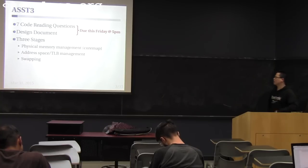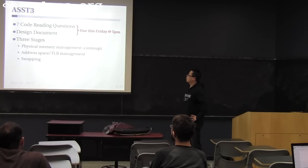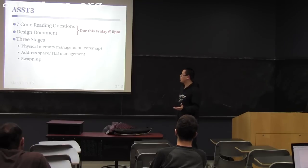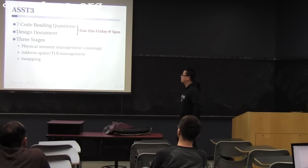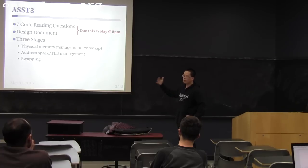This is a summary. It has questions as usual and a design document, both due this Friday afternoon. You can split the assignment into three stages. The first stage is physical memory management — you allocate physical pages inside the kernel. The second stage is designing the user address space and page table, including TLB handle management. Finally, you will do swapping. In the first stage, you don't need to worry about user address space or page table at all — you just allocate and free physical pages.